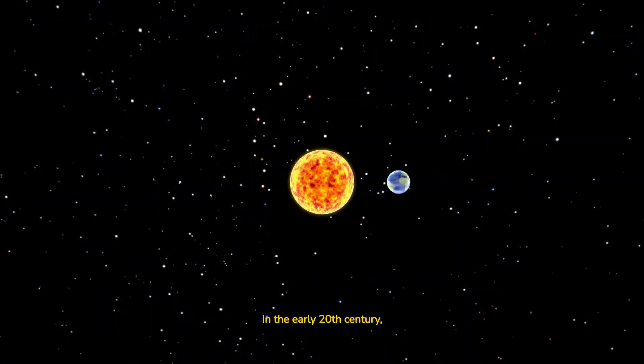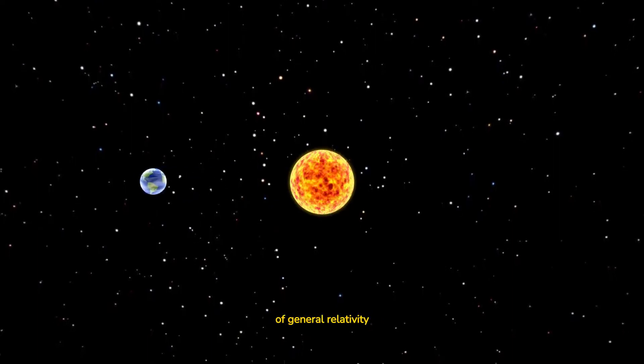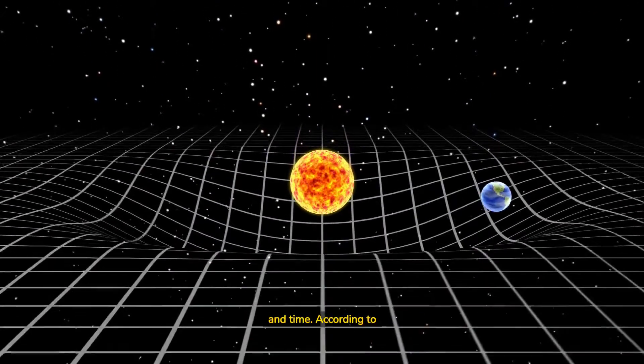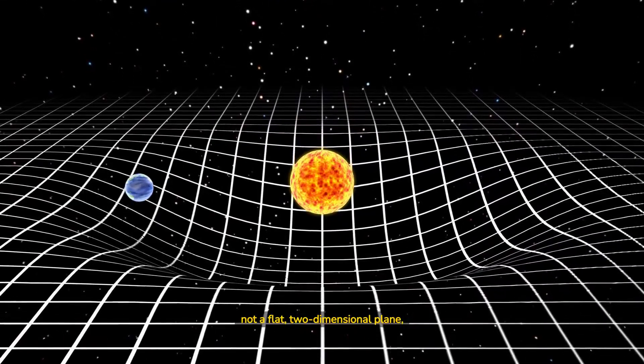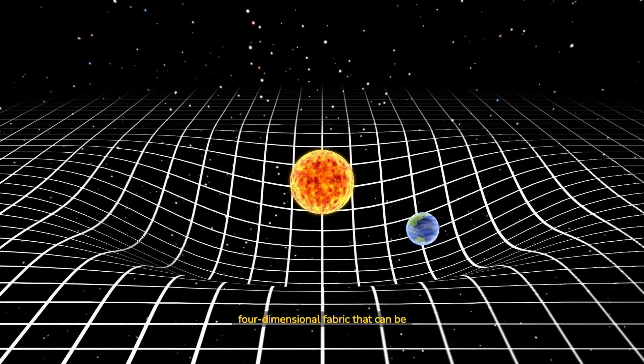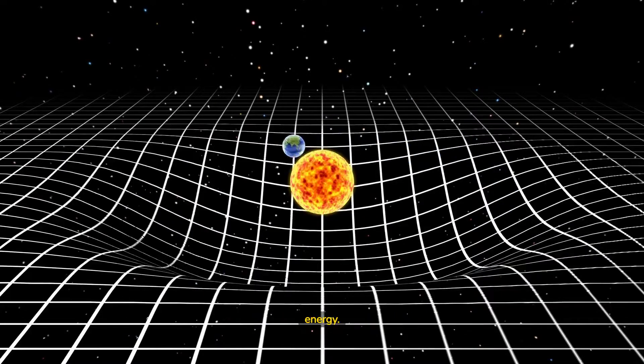In the early 20th century, Albert Einstein's theory of general relativity revolutionized our understanding of space and time. According to Einstein, space is not a flat, two-dimensional plane, but a curved, four-dimensional fabric that can be warped by the presence of matter and energy.